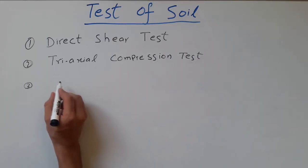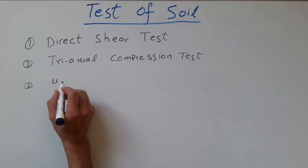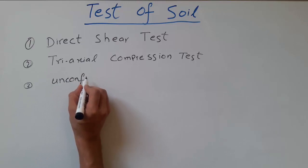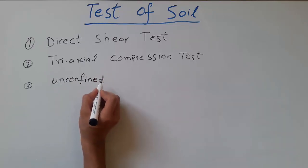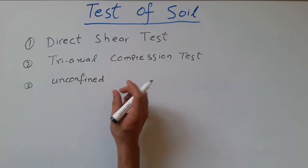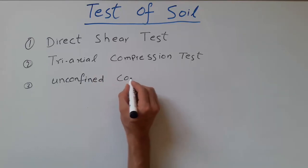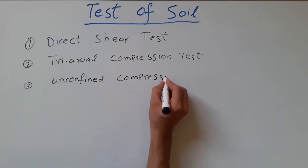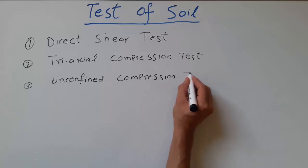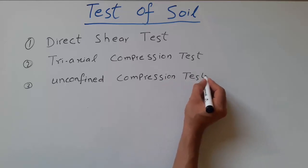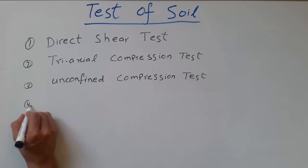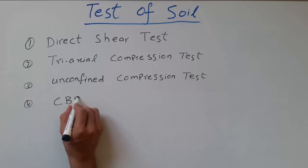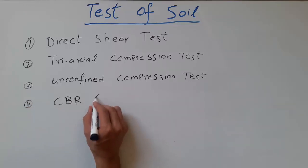The third one we have is the unconfined compression test. The fourth test we have is CBR — California bearing ratio.